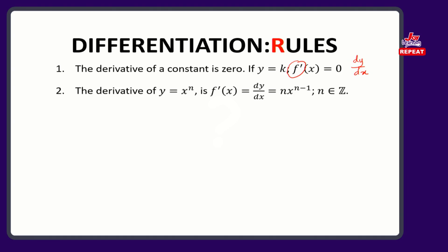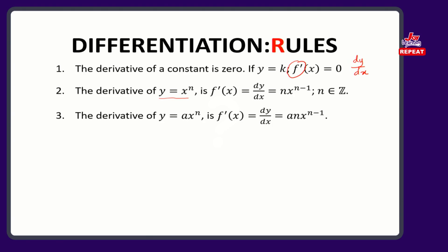Secondly, the derivative of y equals x to the power n: the power n multiplies the coefficient — the coefficient of x here is 1, so it becomes n. Then I subtract 1 from the power, so I have n minus 1. So long as n is an integer, positive or negative, if you're asked to differentiate y equals x to the power n, all you need to do is multiply the power by the coefficient and subtract 1 from the power.